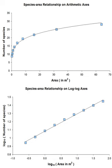The species-area relationship, or species-area curve, describes the relationship between the area of a habitat, or a part of a habitat, and the number of species found within that area. Larger areas tend to contain larger numbers of species, and empirically, the relative numbers seem to follow systematic mathematical relationships.